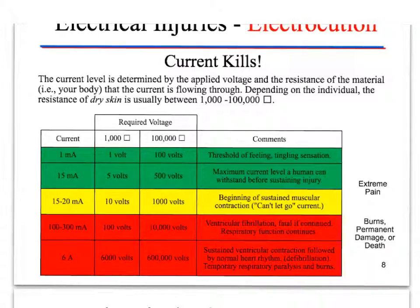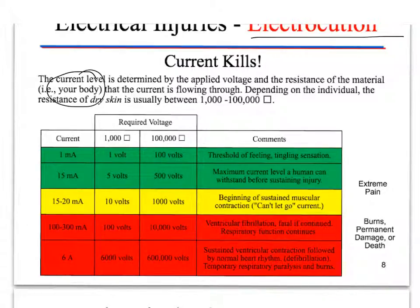Electrical injuries — electrocution. Current kills. The current level is determined by the applied voltage and the resistance of the material that the current is flowing through — in this case, your body. Depending on the individual, the resistance of dry skin is usually between 100,000 ohms.